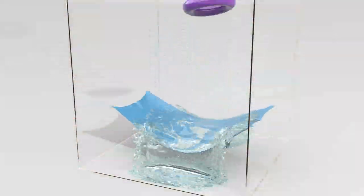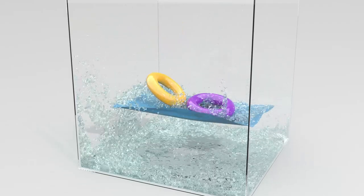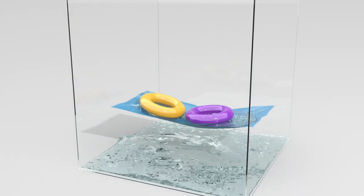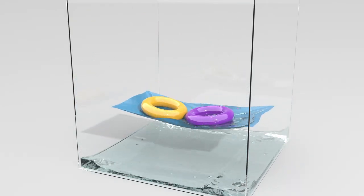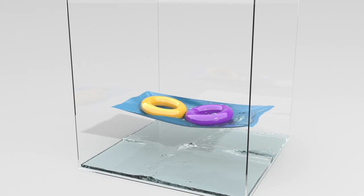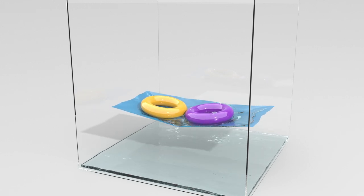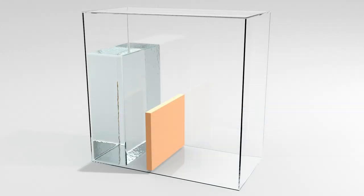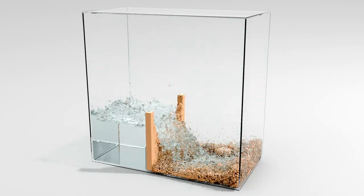We can use merging and splitting for coupling different simulation methods as well. In this example, we're using SPH with explicit integration for fluid particles and mass spring systems and peridynamics with implicit integration for solids. This allows simulating fracture due to fluid interaction.